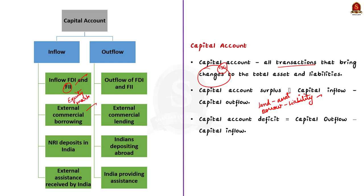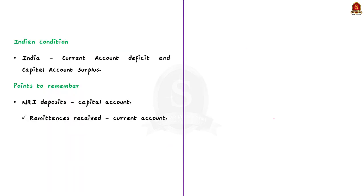The capital account also includes NRI deposits in Indian banks, Indians depositing in foreign banks, and external assistance by multilateral organizations such as the World Bank Group. The capital account may also be surplus or deficit. When capital inflow is more than capital outflow, the capital account is in surplus. When capital outflow is more than capital inflow, the capital account is in deficit.